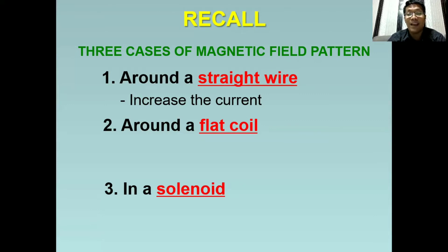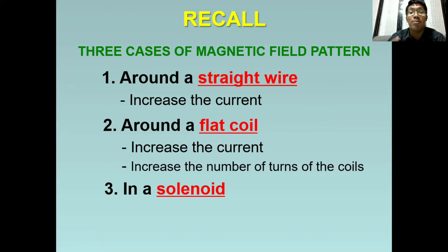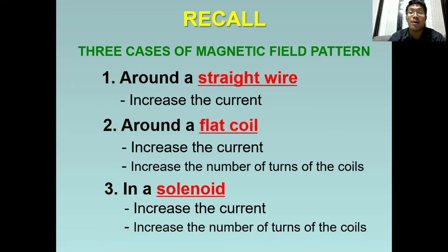How about for a flat coil? We can also increase the current, and at the same time, we can increase the number of turns of the coil. And lastly, for the solenoid, we can increase the current, increase the number of turns of the coil, and we can also put or place a soft iron coil within it. And through this method, we can have stronger magnetic field.